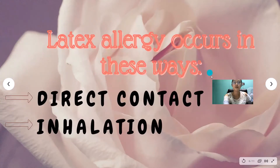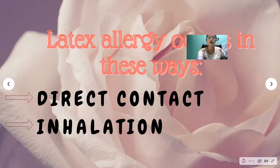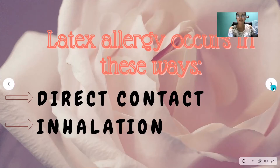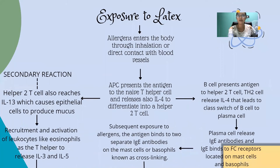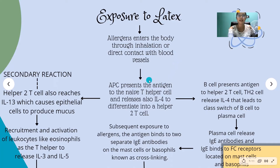Latex allergy occurs in two ways: direct contact or inhalation. The pathophysiology begins with exposure to latex — the allergens enter the body through inhalation or direct contact. The antigen-presenting cells then present the antigen to naive T-helper cells and release interleukin-4 to differentiate into T-helper 2 cells.